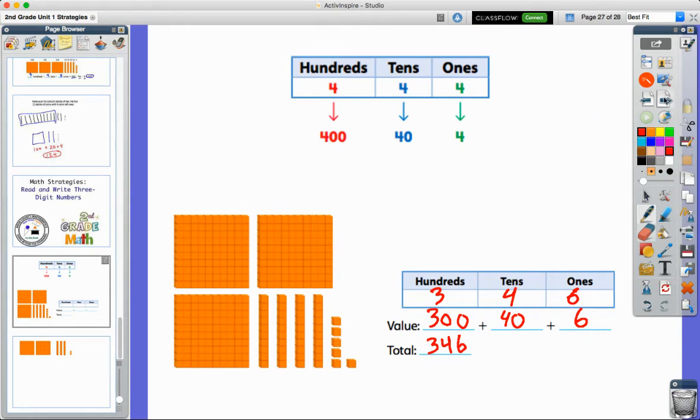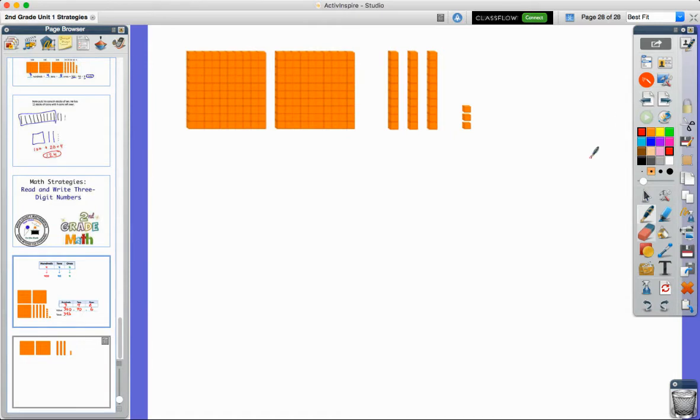Now, I want to look at a few more examples on how to read and write numbers. So let's look at this example of base 10 blocks. Again, I see two groups of 100, three groups of 10, and then three ones.